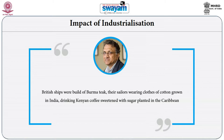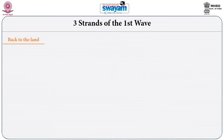Let's return to Guha's framework of the global spread of environmentalism. He has identified two waves, and within the first wave, three strands: first, back to the land; second, scientific conservation; and third, wilderness ideas. Let us discuss the first strand of the first wave — back to the land ideas.